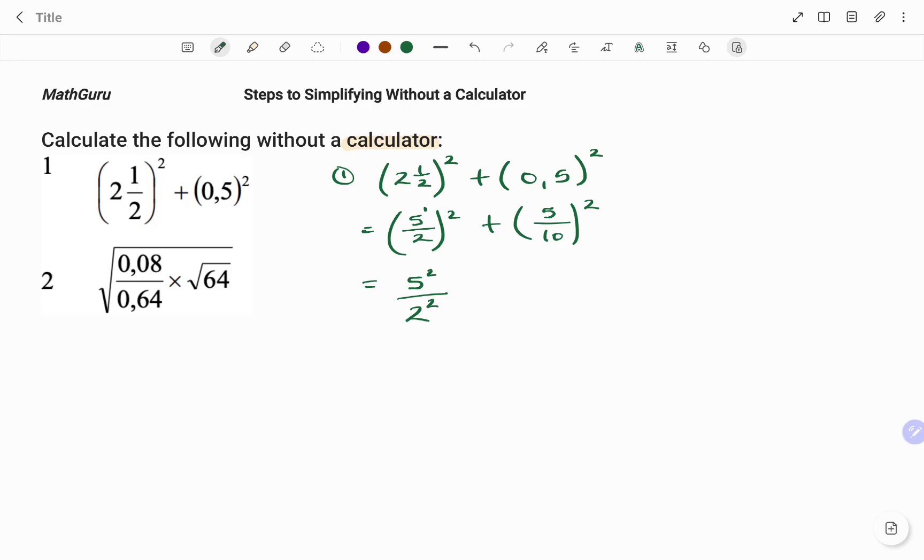I'm going to do the same thing on my right-hand side. So that would be 5 squared. I'm distributing the power. 5 squared, which is 5 times 5, which is 25,